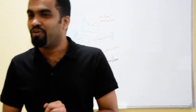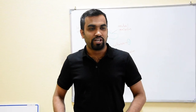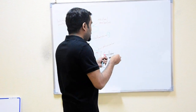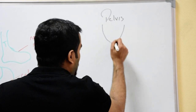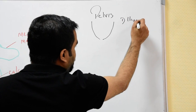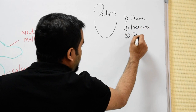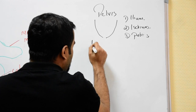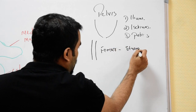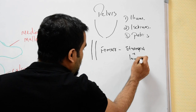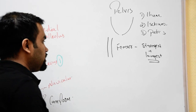Hello, so today we are covering the bones of the lower limb. Starting with the lower limb, we have the main bone which is the pelvis. The pelvis is made up of two innominate bones. In the thigh, we have the bone called the femur, which is the strongest as well as the longest bone in the body.